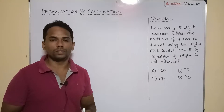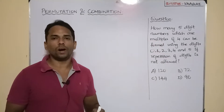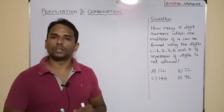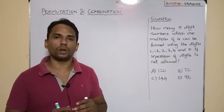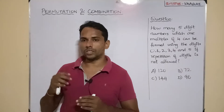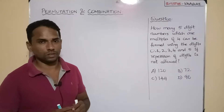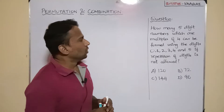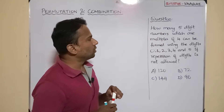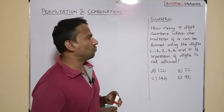Hi and hello, dear friends. Welcome back once again to our channel Vagai Academy of Mathematics. This session we have an interesting question from the concept of permutations and combination. Let's directly get into the question: How many 5-digit numbers can be formed which are multiples of 4?